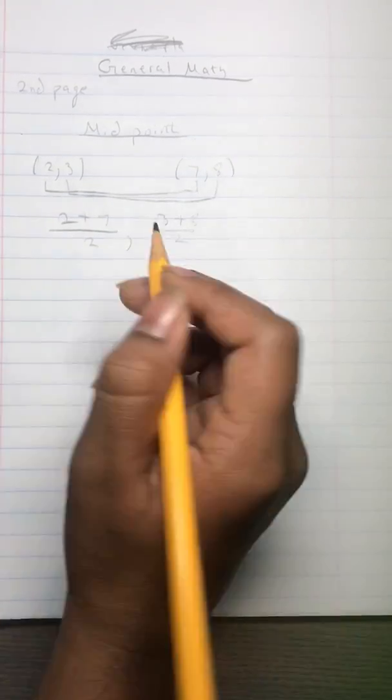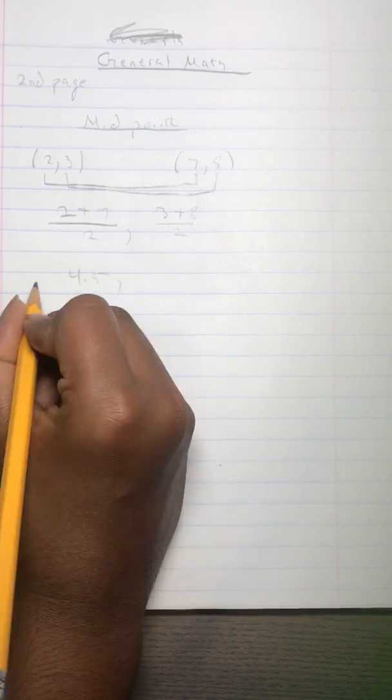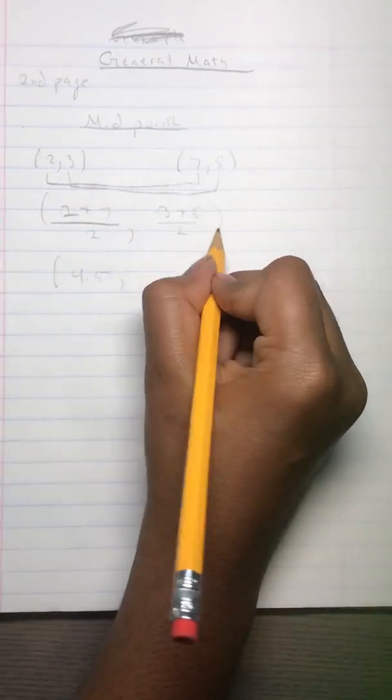2 plus 7 is 9, divided by 2 is 4.5. So 4.5 comma, just put parentheses, alright.